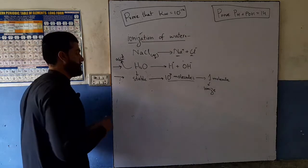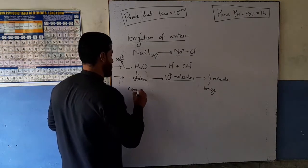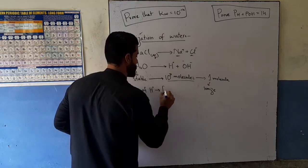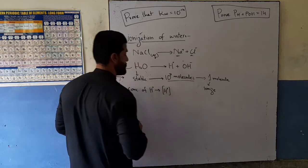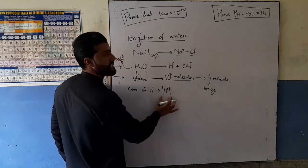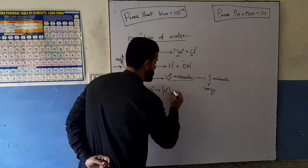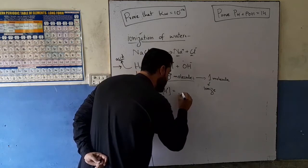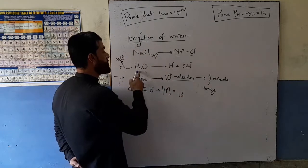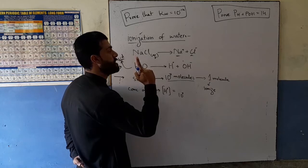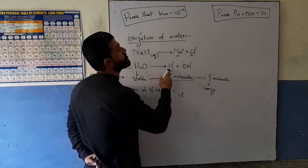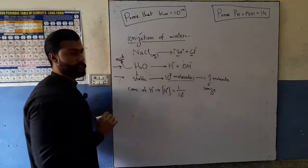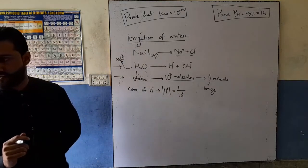The concentration of hydrogen ion: since out of 10 to the power 7 water molecules only one ionizes, the hydrogen ion concentration is equal to one out of 10 to the power 7 water molecules — that is, 10 to the power minus 7.